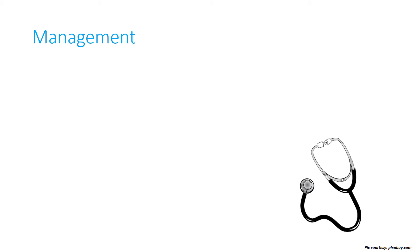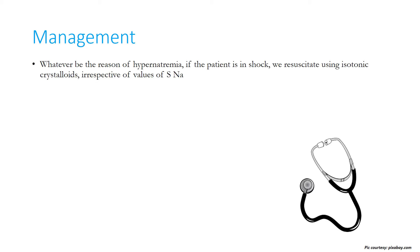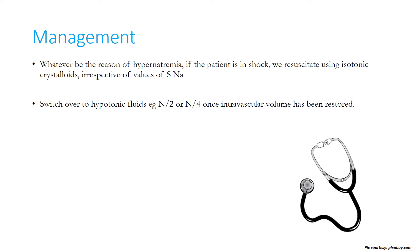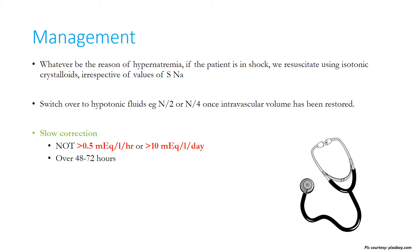Whatever the reason for hypernatremia, correction of ABC — airway, breathing, circulation — takes precedence. If the patient is in shock, resuscitate using isotonic crystalloids irrespective of serum sodium values, then switch to hypotonic fluids like N/2 or N/4 only once intravascular volume is restored. Correction of hypernatremia should not exceed 0.5 mEq per litre per hour or more than 10 mEq per litre per day.